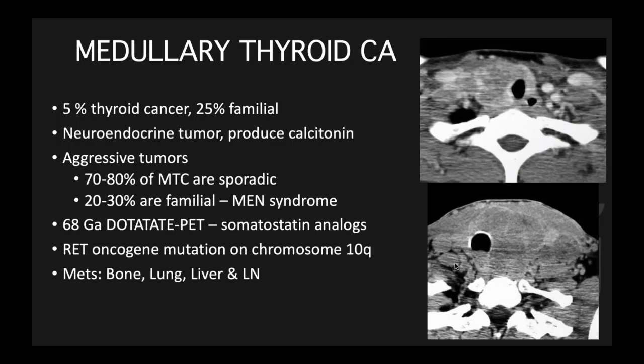Medullary thyroid cancer is a neuroendocrine tumor that produces calcitonin, not iodine. The exciting thing about medullary thyroid cancer is the dotatate PET scan, which is a somatostatin analog. You don't really need dotatate for very local, regionally confined medullary thyroid cancer, but when it extends to lungs, bones, and distant metastases, dotatate PET is positive and you can actually treat with lutetium, an alpha-emitting agent — similar to iodine therapy. If the tumor takes up dotatate via somatostatin receptor, you can treat with the alpha-emitting agent.